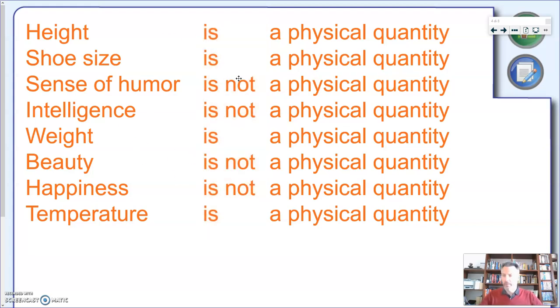So let's look at the answers together. So I hope this will not come as a surprise. Height is a physical quantity, shoe size is a physical quantity, sense of humor, which of course is quite subjective—now some people might think you have sense of humor, some people might think you don't have—it's not a physical quantity. Intelligence, and I already know that some of you might say 'oh mister, but there's the IQ.' But actually the IQ is an imperfect tool and there's a lot of debate whether or not you can measure intelligence. Well as far as we're concerned, intelligence is not something you can measure. Weight is a physical quantity.